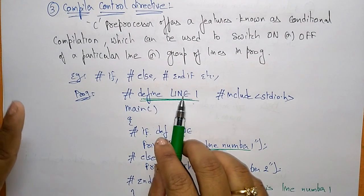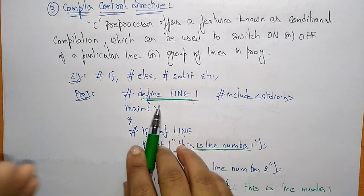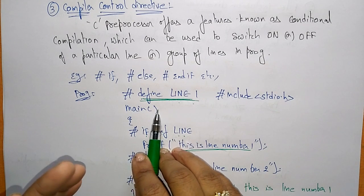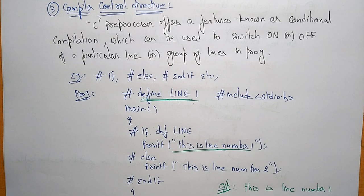This is a compiler control directive, declared at the starting of the program as a macro. With the help of these three preprocessor directives — macro substitution directive, file inclusion directive, and compiler control directives — we can write C programs easily. Thank you.